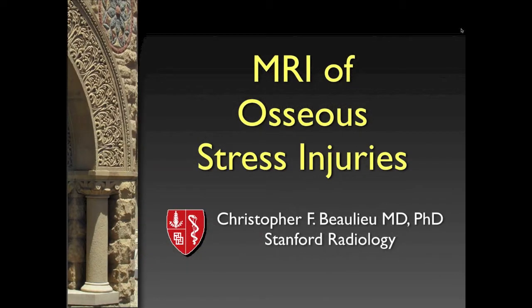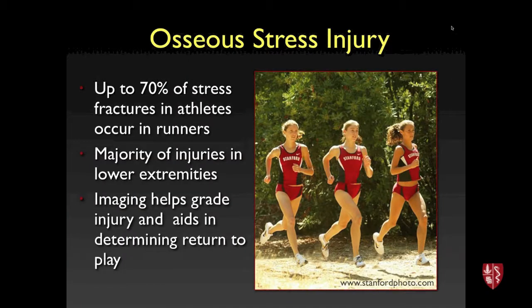Today's topic is MRI and imaging of osseous stress injuries. This is an important topic at Stanford where we see a large number of these imaging studies. The majority of injuries are in running athletes and occur in the lower extremities. The role of imaging is to help detect and grade the injury, which helps the managing physicians determine return to play or competition.